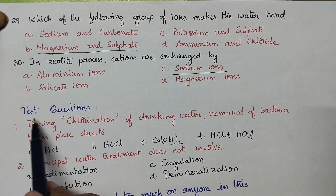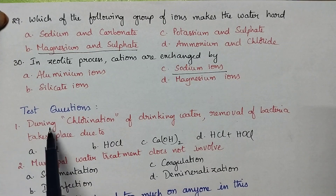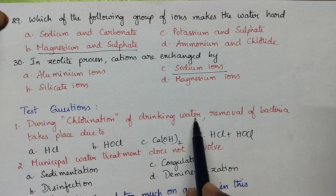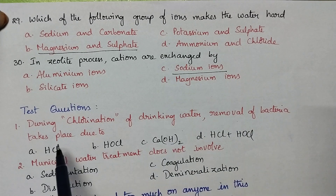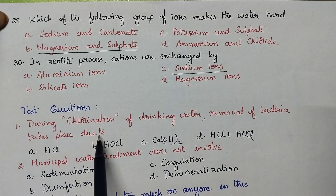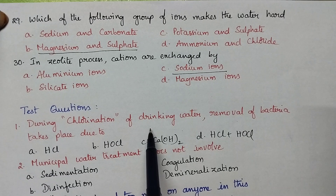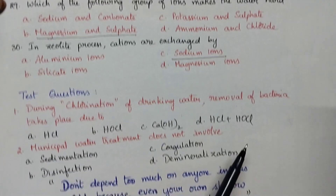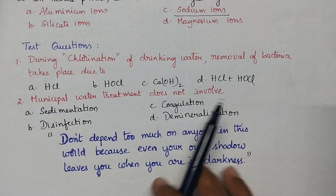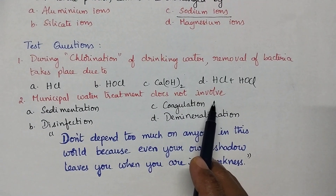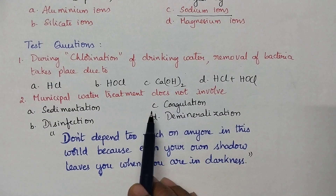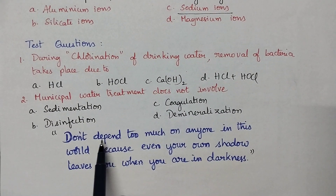Coming to the test questions: During chlorination of drinking water, removal of bacteria takes place — which chemical is responsible? Municipal water treatment does not involve which of the following process?